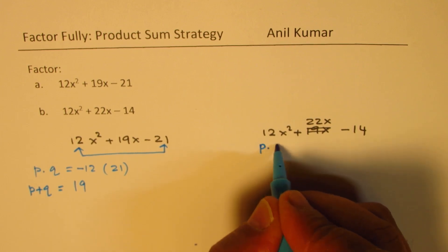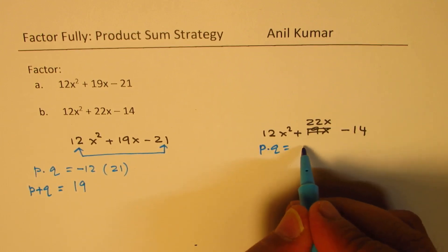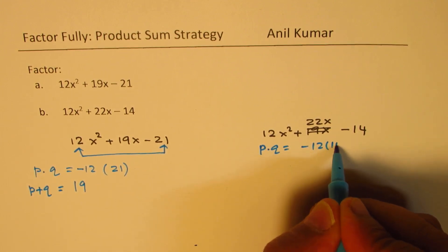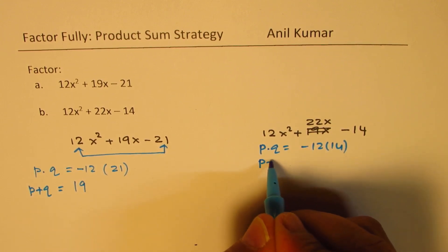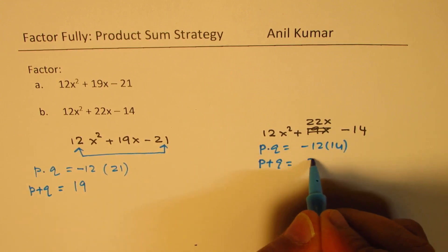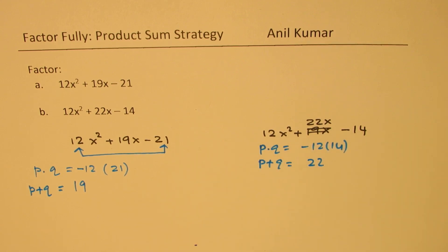In this case, we want product of the two numbers to be -12 times 14. That's a big number. And the sum should be 22 positive. How do we get these numbers? That is the major thing.